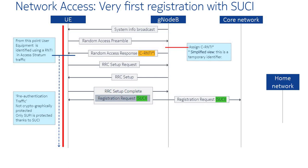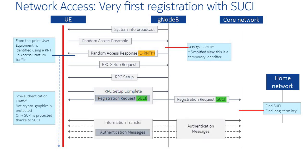This is why it is important to not send the Subscription Permanent Identifier, SUPI, but send the SUCI instead. The SUCI is deciphered by the home network and used to find the Subscription Permanent Identifier and retrieve the subscription data and authentication credentials, so that the authentication procedure can be carried out.